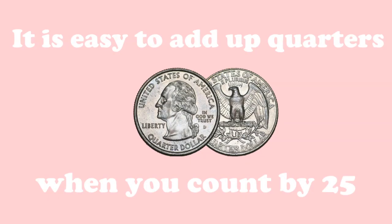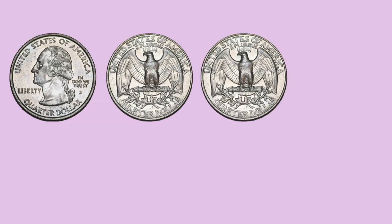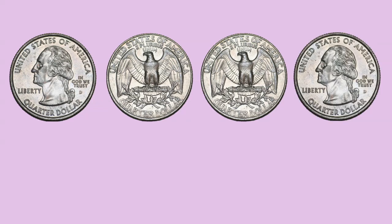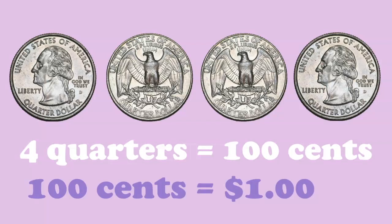It is easy to add up quarters when you count by 25. Let's practice counting by 25. 25, 50, 75, 100. Four quarters equals 100 cents. One hundred cents equals one dollar.